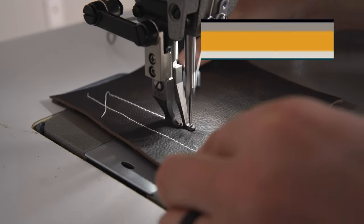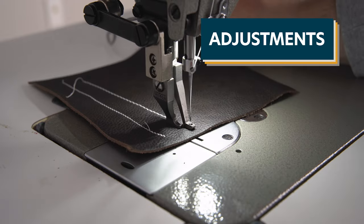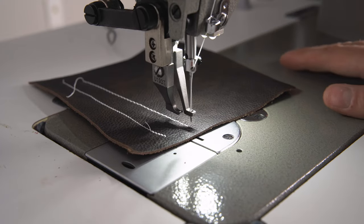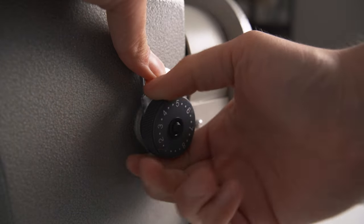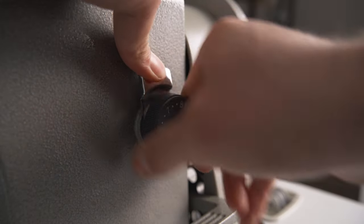A number of adjustments can be made on the machine to fit your stitching style or project. The length of your stitch can be adjusted with the stitch length dial. Push in the metal tab above the dial, rotate to your desired length, and release the tab to lock in your selection.